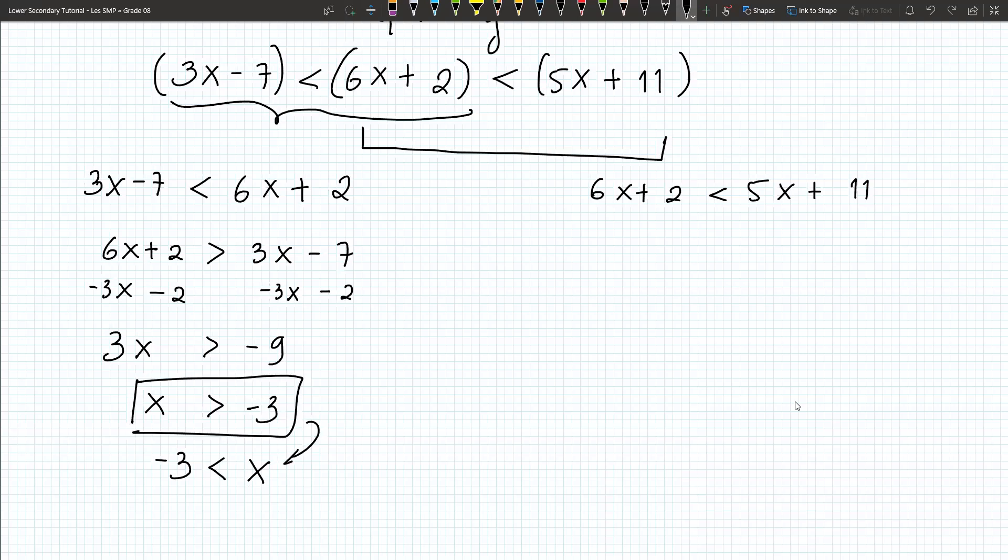So now, 6x plus 2, 5x plus 11, this is the second part. I subtract both sides with 5x, so I have here x smaller than 11 minus 2, so I have 9. X smaller than 9.